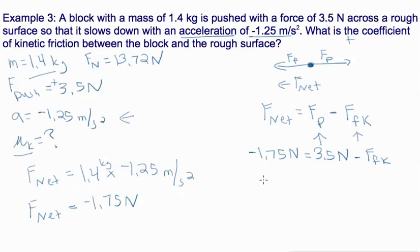So we can subtract 3.5 from both sides and that gets us negative 5.25. And then we can cancel out both of these negatives.